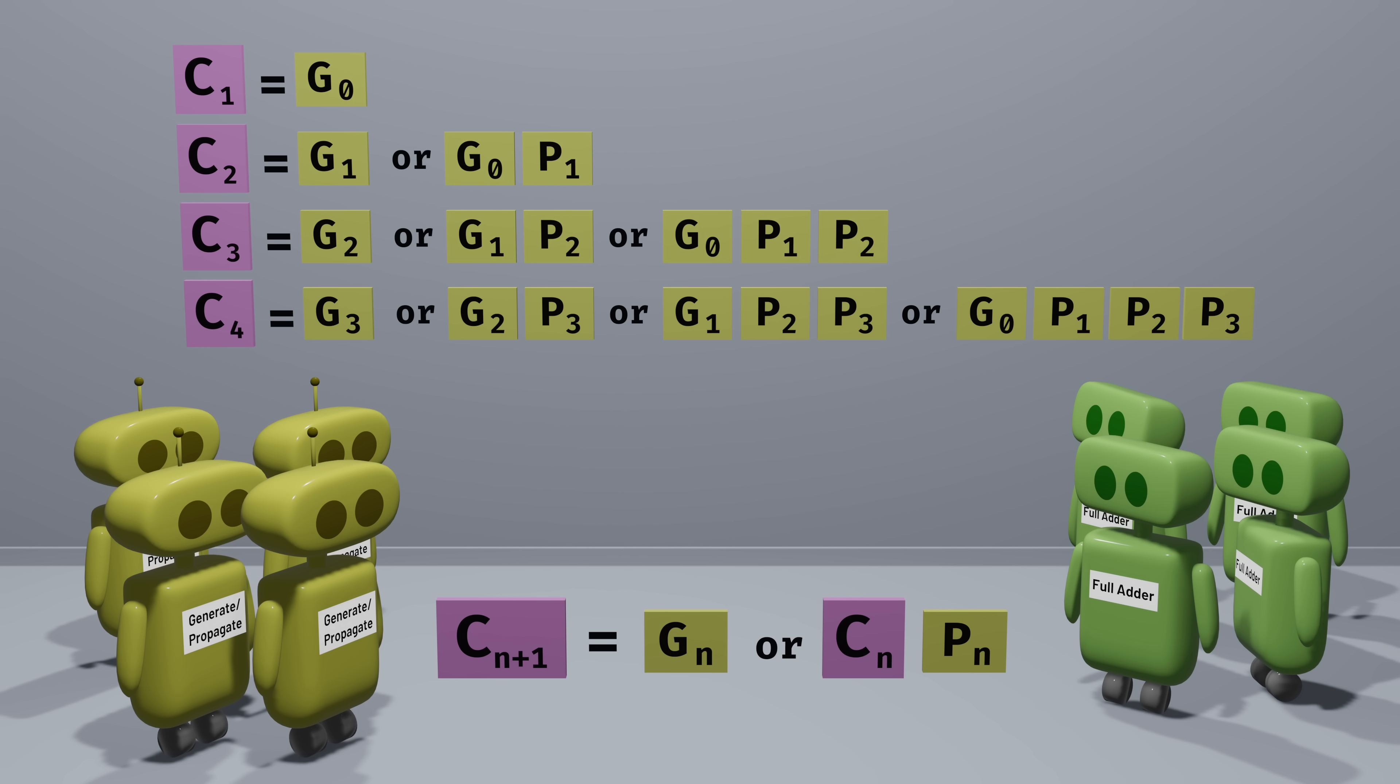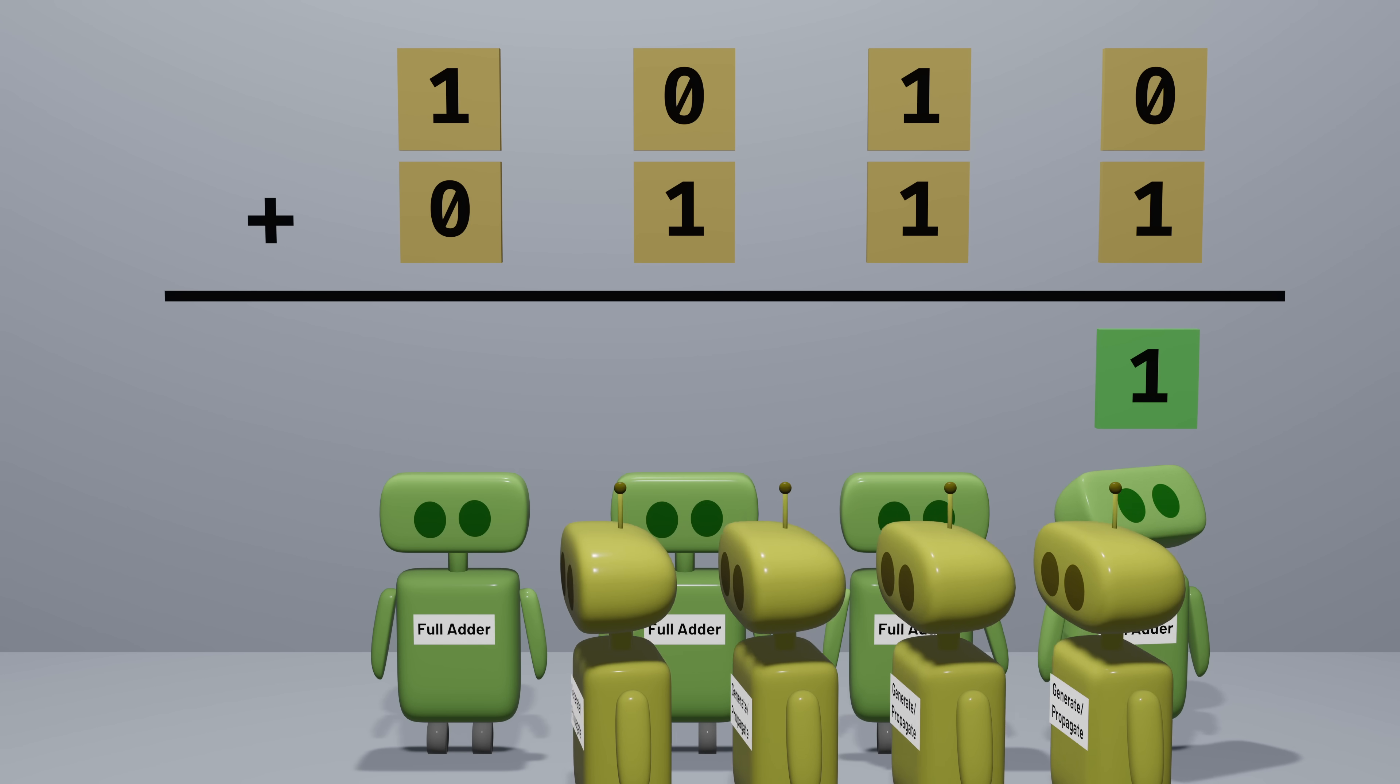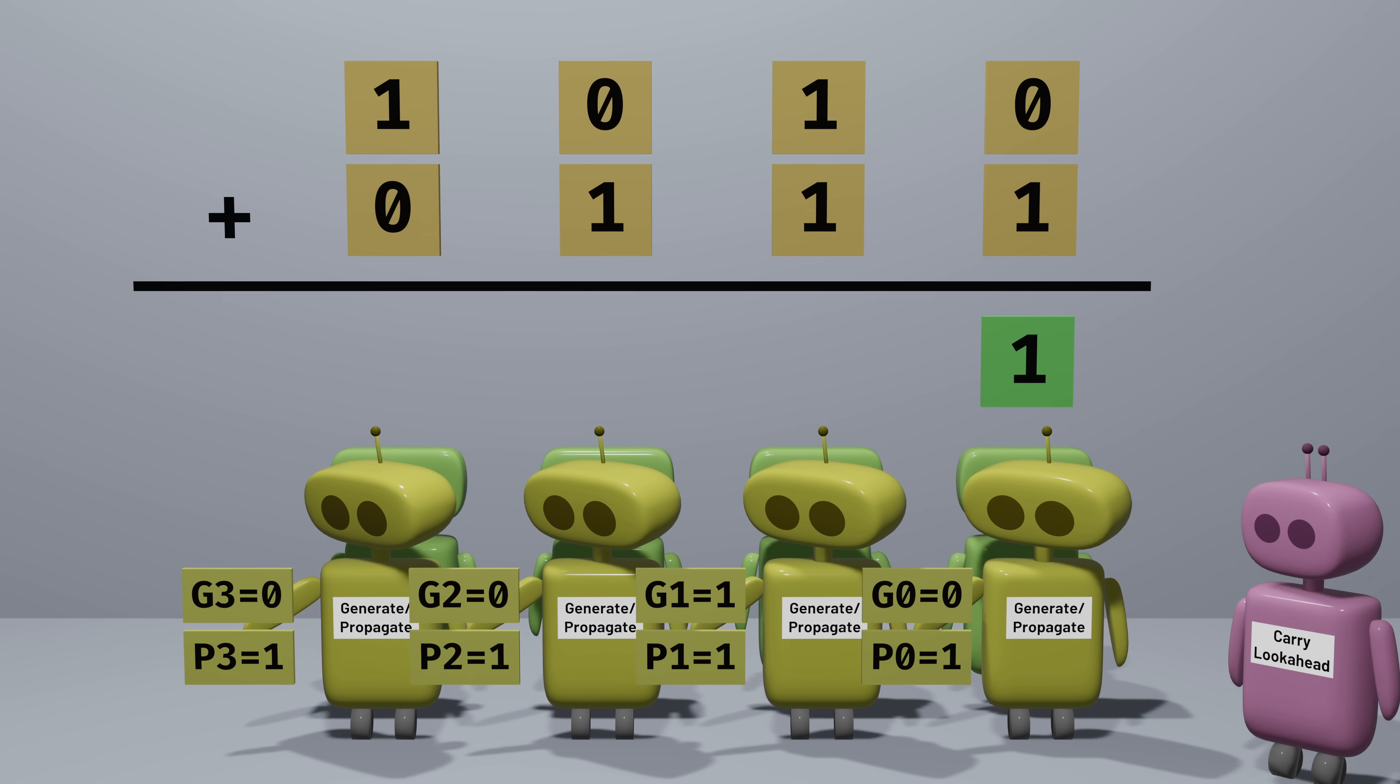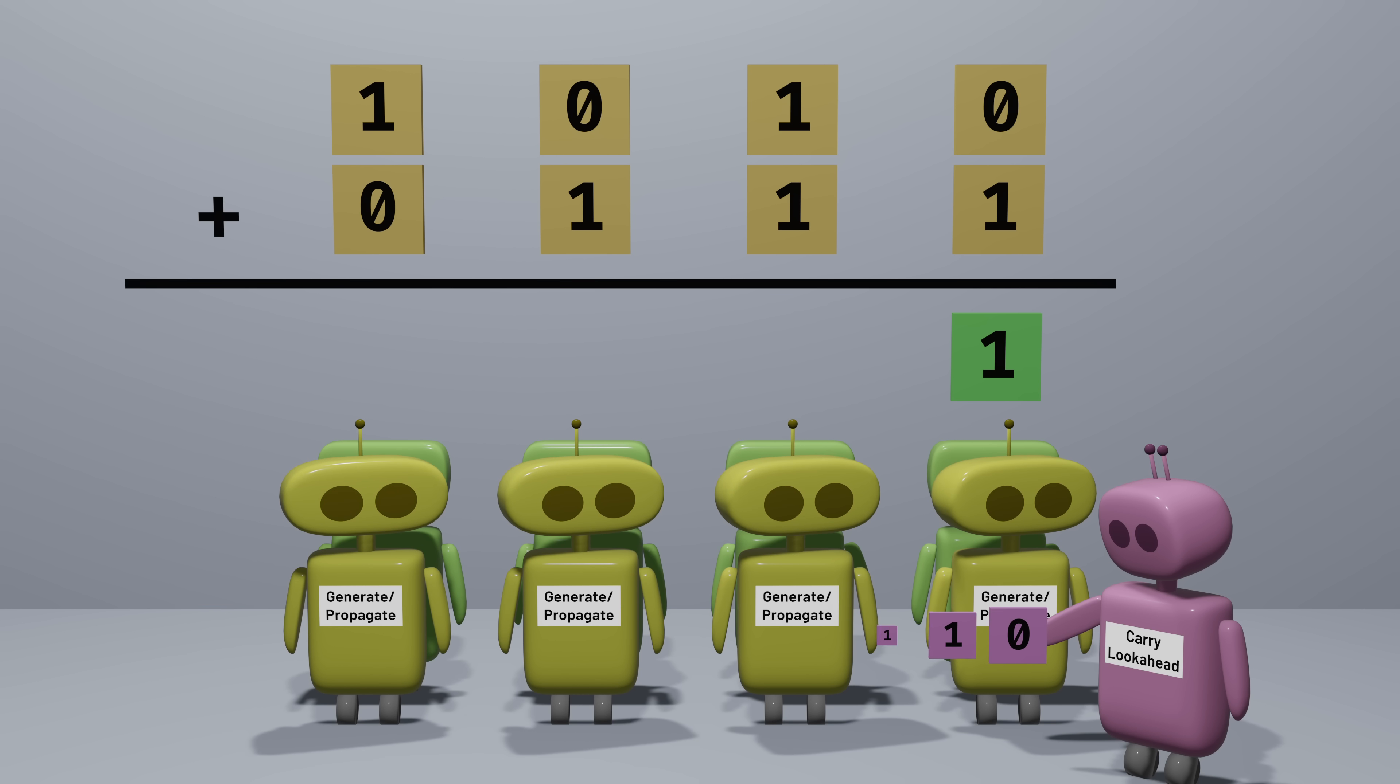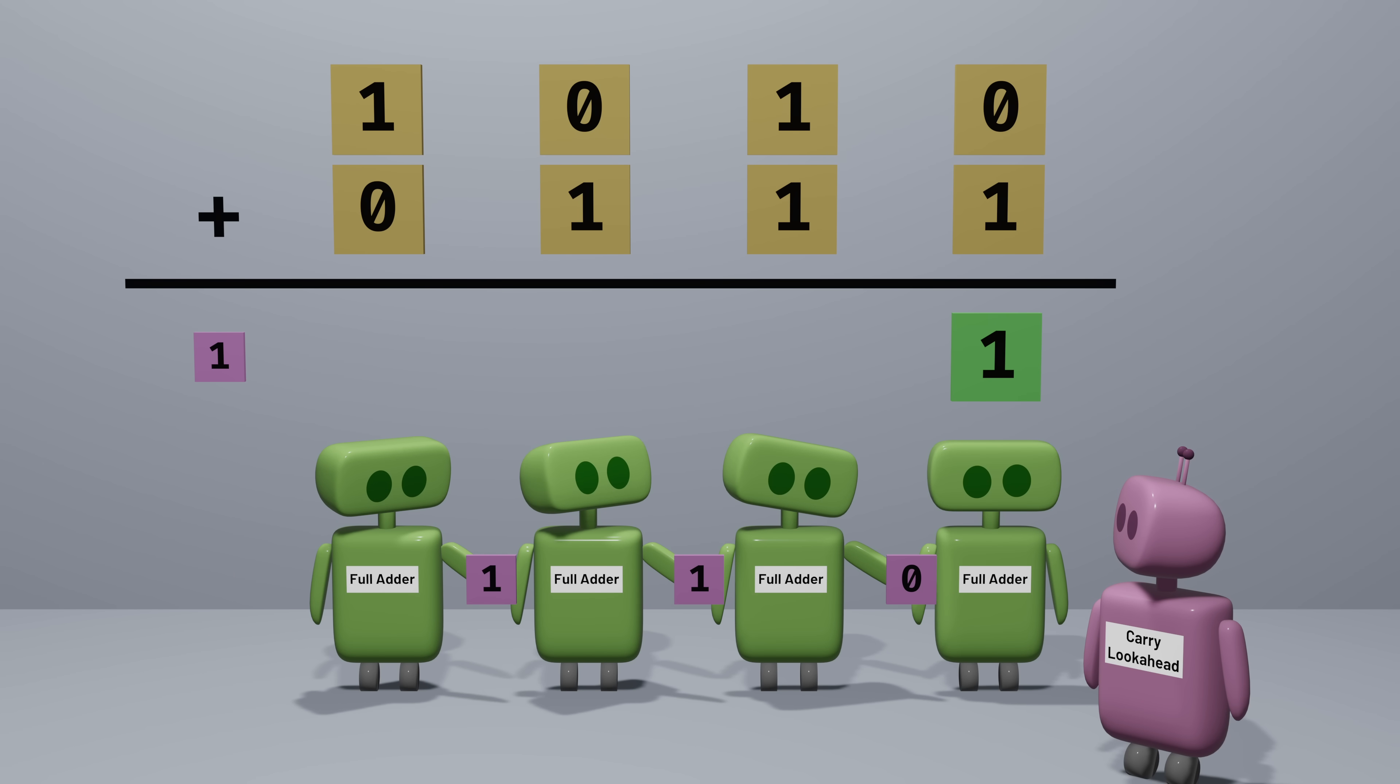The result is that when adding these two 4-bit numbers, while the first pair of bits is being added together, we can compute propagate and generate values and start combining them. This results in all of the carry values, which can then be passed to all of the other single bit adders so that they can do their work simultaneously.